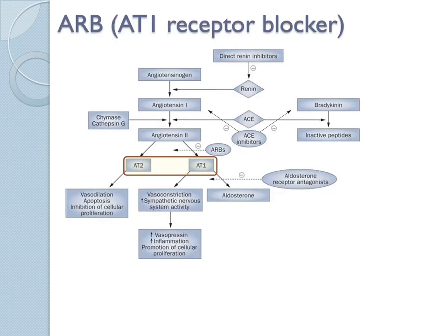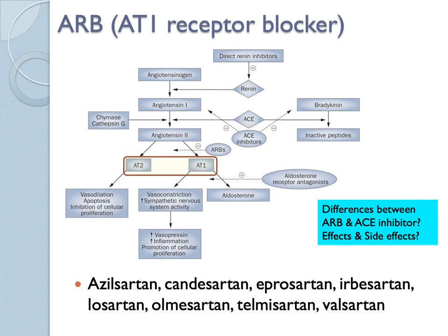The ARB — angiotensin receptor blocker — targets AT1 and AT2 receptors. AT2 activation is actually what you want because it causes vasodilation, so we only antagonize AT1 receptors. The main difference is that because it's specific to the receptor, it has nothing to do with the bradykinin pathway, so you won't have the annoying dry cough side effect. If someone experiences dry cough from an ACE inhibitor, you just switch them to an ARB.